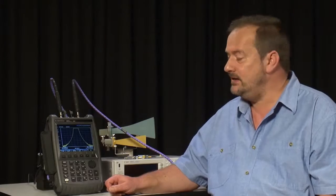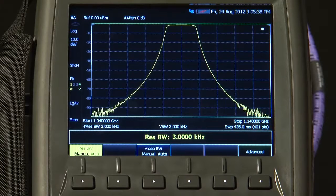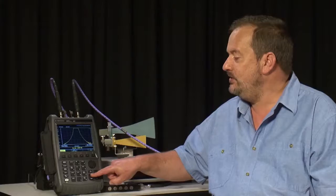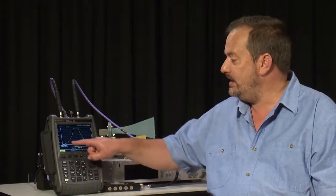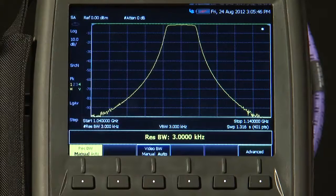We could increase the dynamic range of the measurement by pressing the Bandwidth button and narrowing the resolution bandwidth. But as you know, that will also cause the trace to sweep slower. I will go back to 10 kHz.